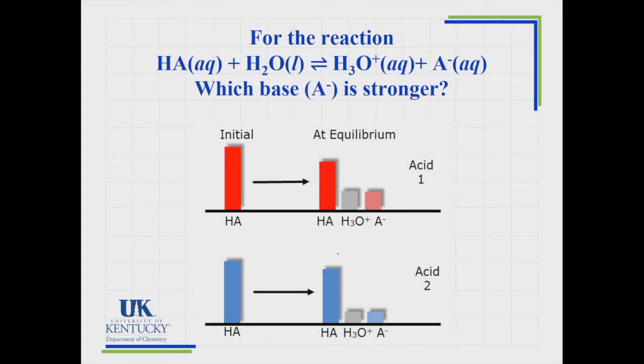Remember back to that little blue box. Which base, called A minus in this case - it's a conjugate base - which base would be stronger? The blue A minus, which is from the second reaction, would be stronger as a conjugate base. This guy is a stronger base than that guy because the weaker the acid, the stronger its conjugate base.